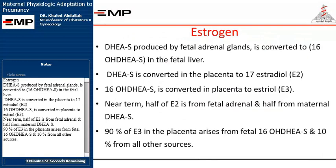Regarding estrogen: DHEAS is produced by fetal adrenal glands and is converted to 16-OH-DHEAS in the fetal liver. DHEAS is converted in the placenta to 17-beta-estradiol (E2), and 16-OH-DHEAS is converted in the placenta to estriol (E3). Near term, half of E2 is from fetal adrenal and half from maternal DHEAS. 90% of E3 in the placenta arises from fetal 16-OH-DHEAS, and 10% from all other sources.